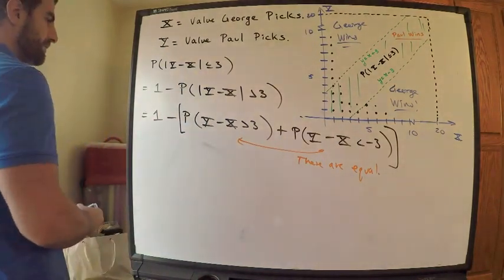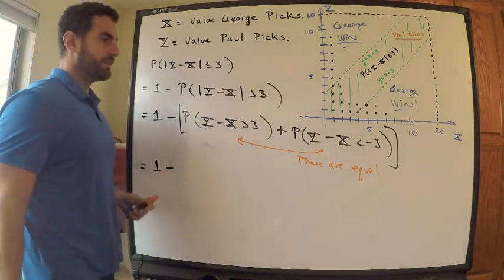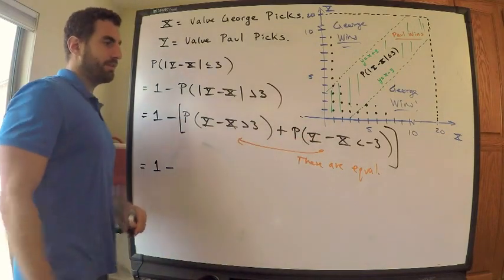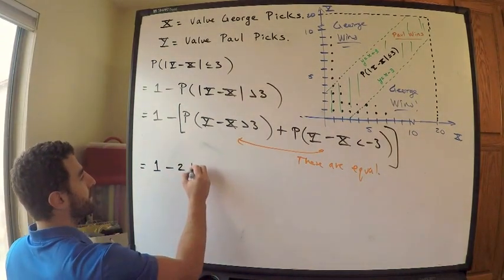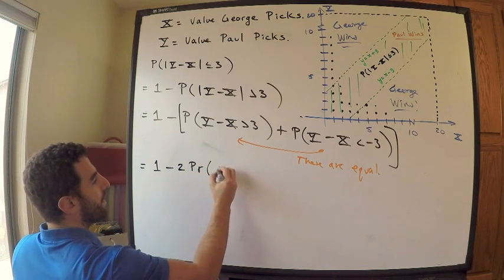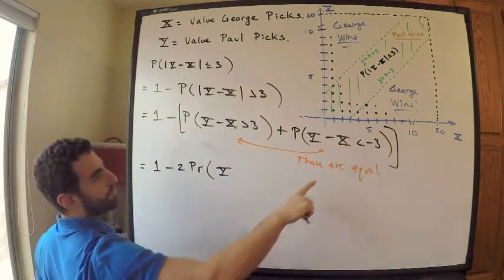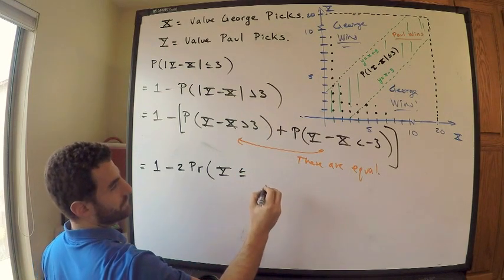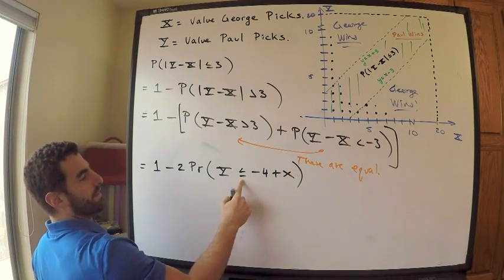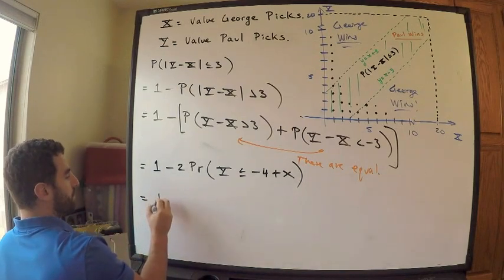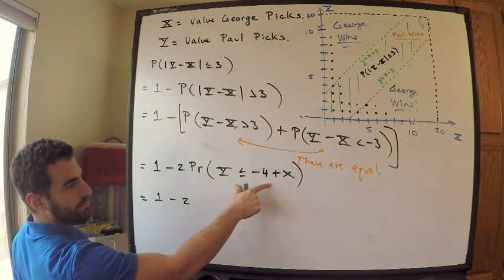So these two are the same value. These are equal. So let's just compute one of them and multiply by 2. That's what I'll do. So this is equal to 1 minus, and I'm just going to compute this one because I feel like it. So this is equal to 1 minus twice the probability that Y is less than negative 3 plus X. That's the same thing as saying it's less than or equal to negative 4 plus X. So I change the inequality to less than or equal to. Okay.